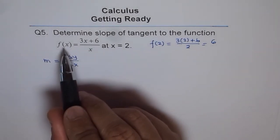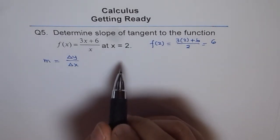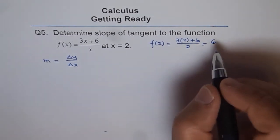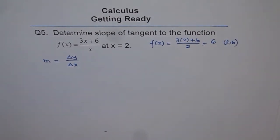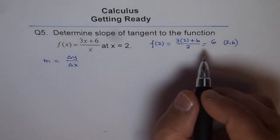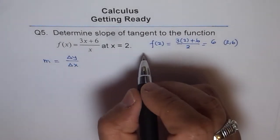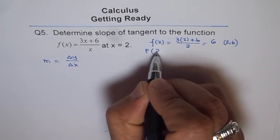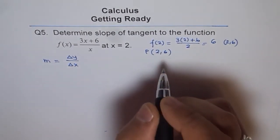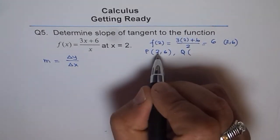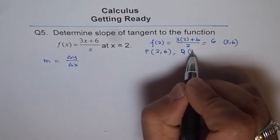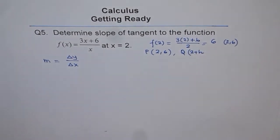We are considering a point which is very close to x equals 2, rather a point very close to the coordinate (2, 6). So let's take two points which are very close. Let's say point P is the given point which is (2, 6) and let point Q be slightly away. We are saying (2 + h) away.